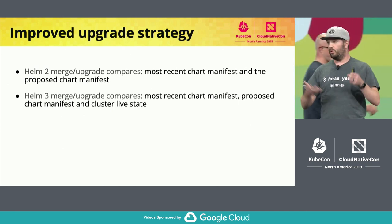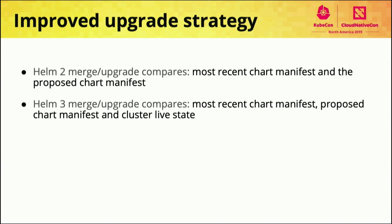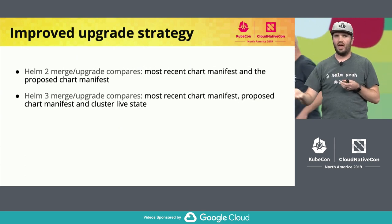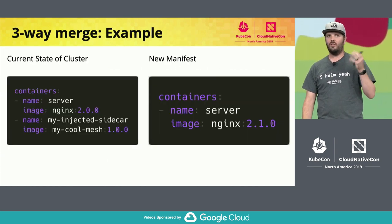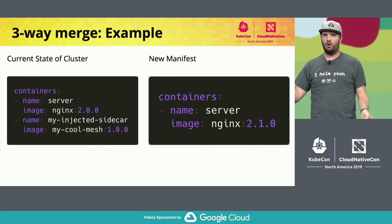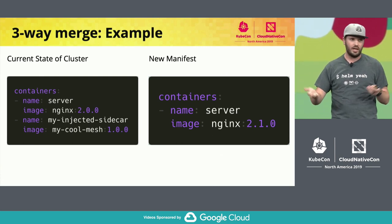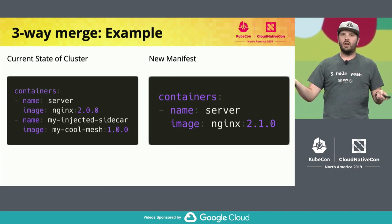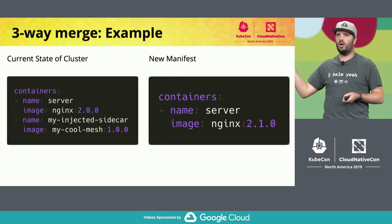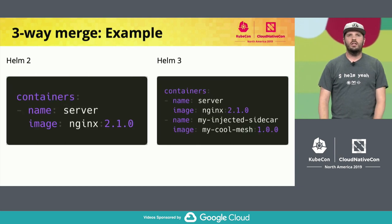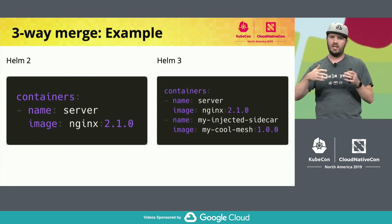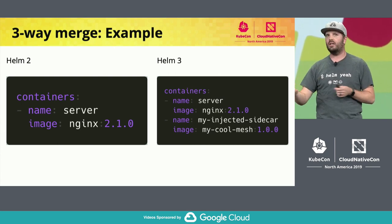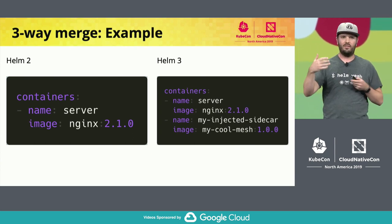In Helm 2, all it was doing was comparing the most recent chart manifest with the new chart manifest you were trying to install, and so it would ignore things added after the fact. Helm 3 changes this to use a three-way merge strategy that includes the live cluster state. So if you have an NGINX pod at 2.0 and a service mesh injects a sidecar, then you bump NGINX to 2.1.0, in Helm 2 you'd end up with just the new container and the sidecar would be gone. In Helm 3, because of the three-way merge, it keeps the sidecar or any additional data added out of band.